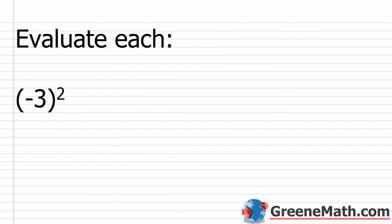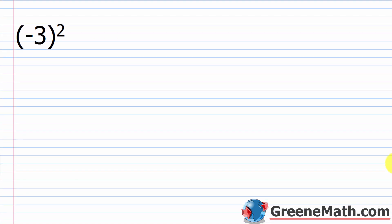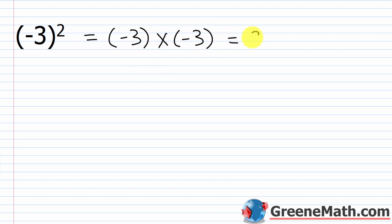Let's do some practice. First, negative 3 inside parentheses, squared. This means negative 3 times negative 3, which is positive 9. Since the base is enclosed in parentheses and the exponent is even, we know the answer is positive — an even number of negative factors gives a positive result.